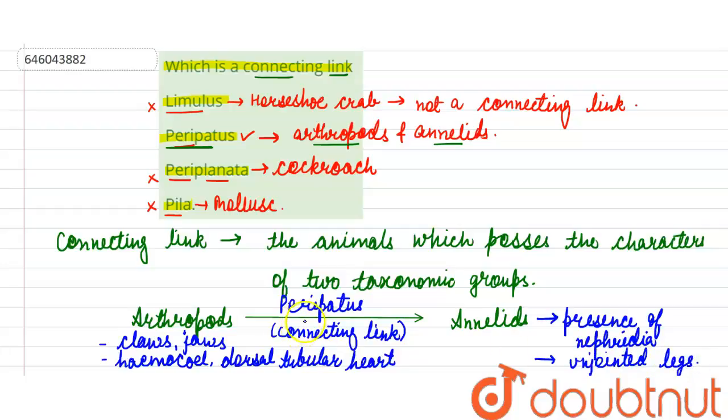So we can say that Peripatus is the connecting link between arthropods and annelids. The correct answer to this question is B, Peripatus. Thank you, students.